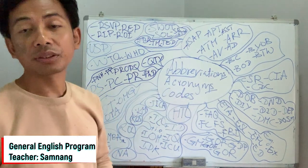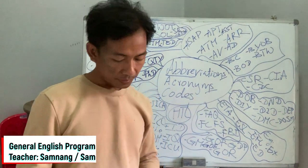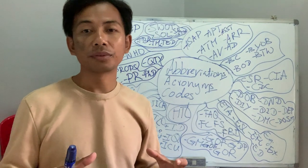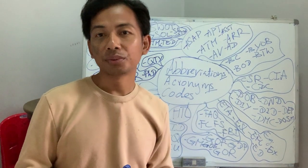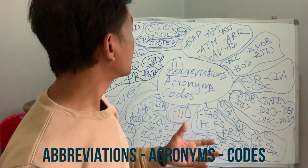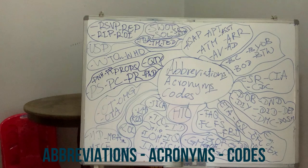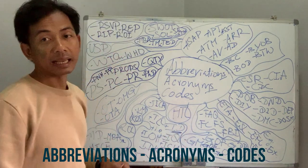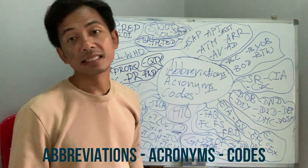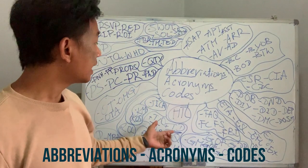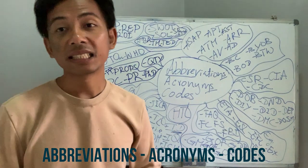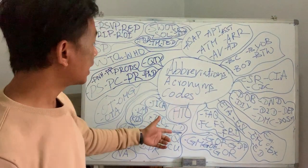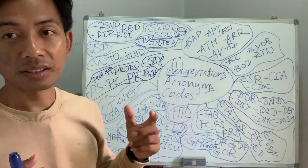And acronyms — what is acronym? Acronym is the first letter or a short way to represent a word. Like example, ID. ID is an acronym because ID is the short form to call 'identification.' It's like identification card, identity card. So ID comes from identification or identity.